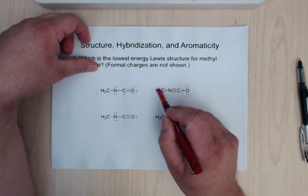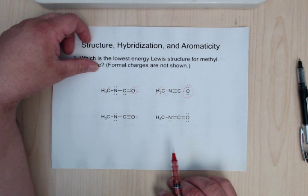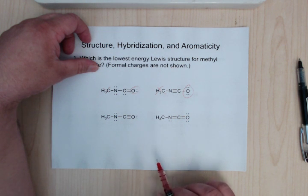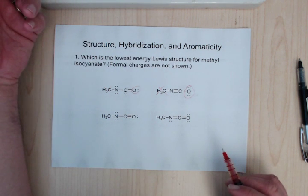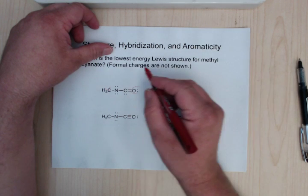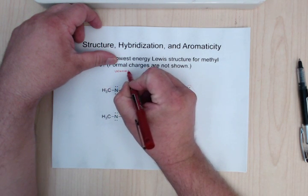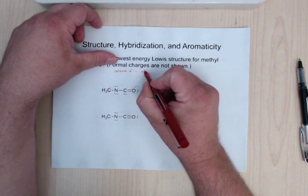We can probably get rid of these because at least these two have all of their octets filled. Now when we're dealing with formal charge, next is probably going to be looking at formal charges. So remember with formal charge, it's going to be valence electrons minus electrons owned.